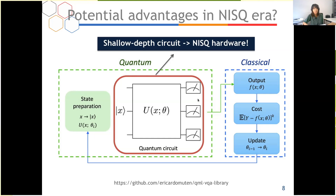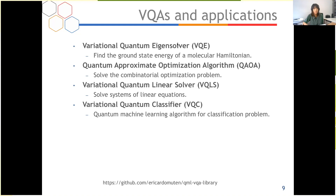Here are some popular VQAs and their applications. First is the variational quantum eigensolver, used to find the ground state energy of a molecule Hamiltonian. Second is the quantum approximate optimization algorithm for combinatorial optimization. Third is the variational quantum linear solver for linear equations. Fourth is the variational quantum classifier for classification problems. There is a GitHub repo that collects many VQAs — I recommend checking it if you're interested.